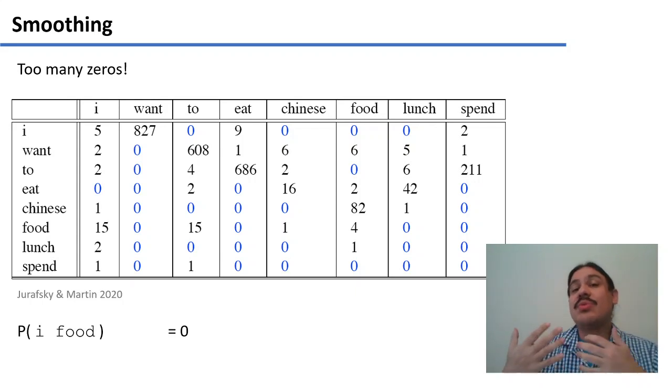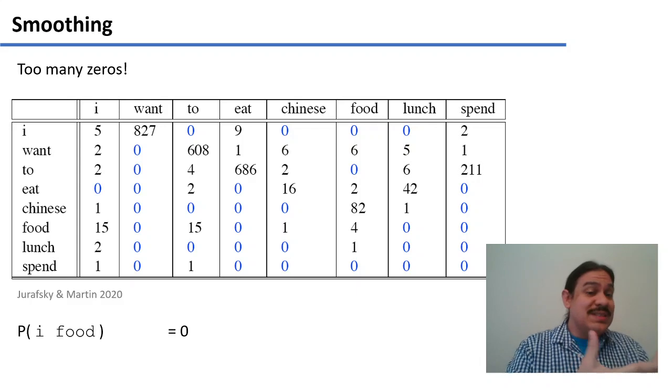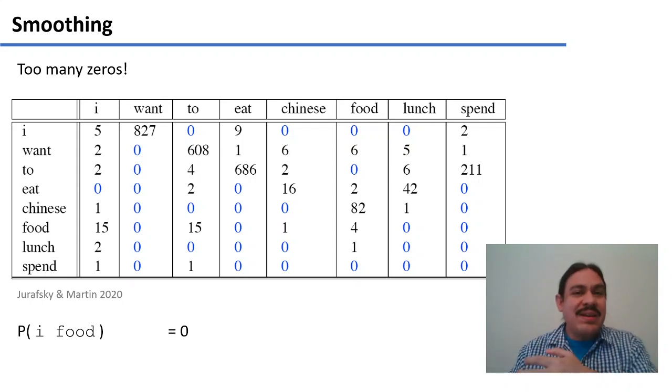So the model will correctly predict that there are some sentences like, I want to eat, that are good English sentences. And it will also correctly predict that there are sentences like, I, food, that are bad English sentences.